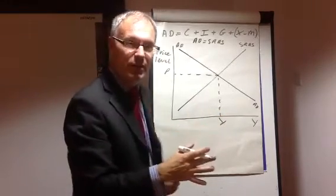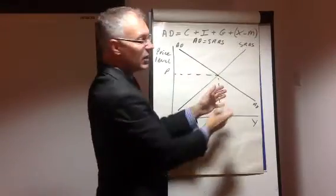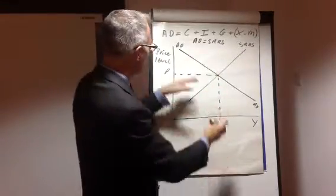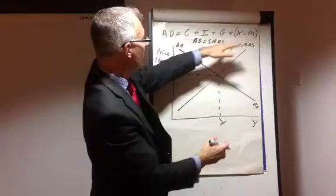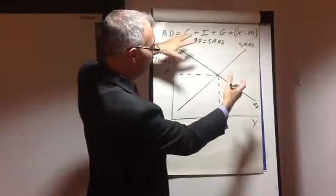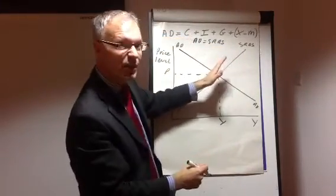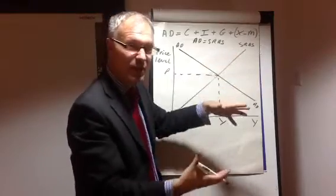And what you need to be very clear about is what shifts each line. Any change in these components here, aggregate demand will shift. Any change in productive costs will shift short-run aggregate supply.